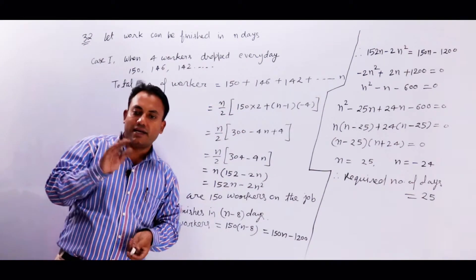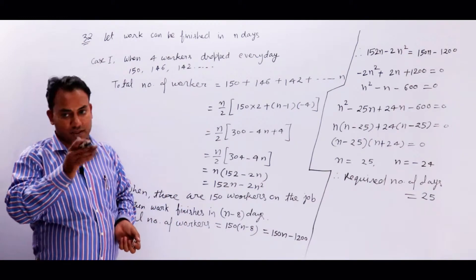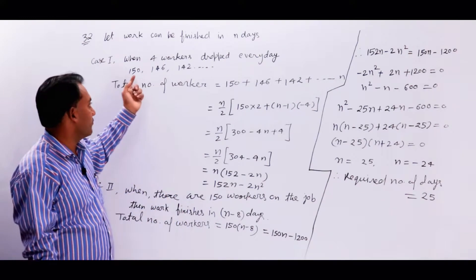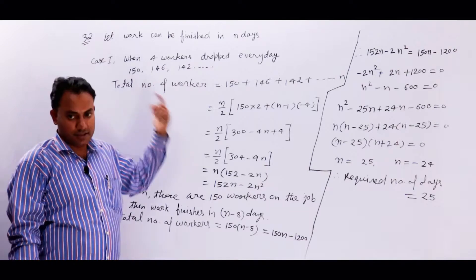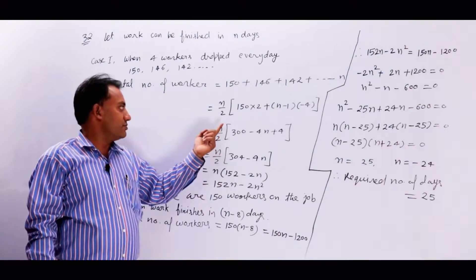You can get this sum. Sn is equal to n upon 2, 2a plus n minus 1 d. So in the first case, the number of workers we will get is Sn. Let's see how we get this value.